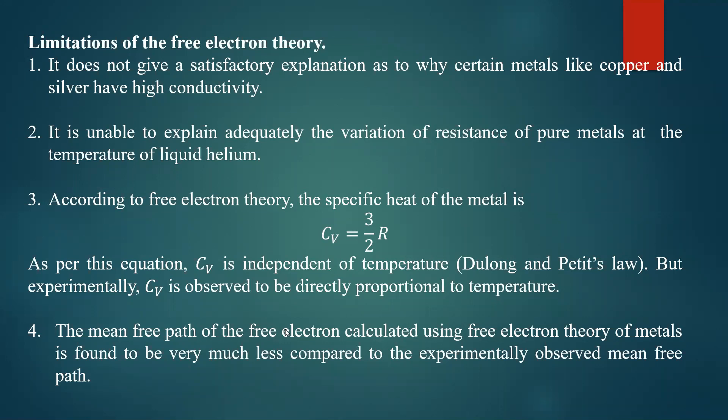The fourth failure: the mean free path of the free electron calculated using free electron theory is found to be very much less compared to the experimentally observed mean free path. The mean free path lambda calculated using the thermal conductivity and electrical conductivity expressions from this theory is much smaller compared to experimental observations. There is a discrepancy in the mean free path, and here classical free electron theory fails.